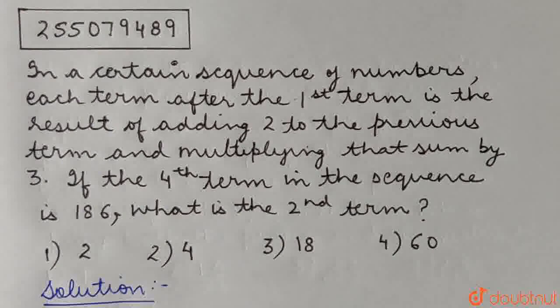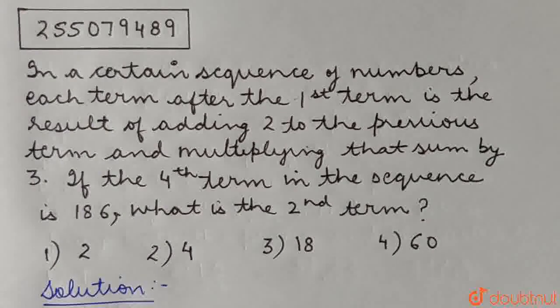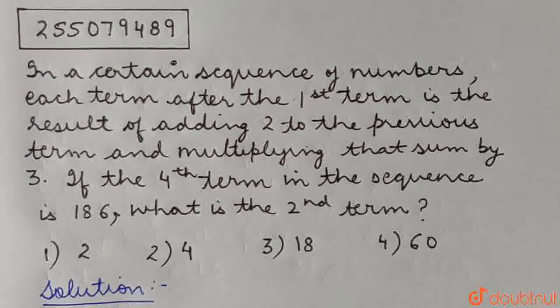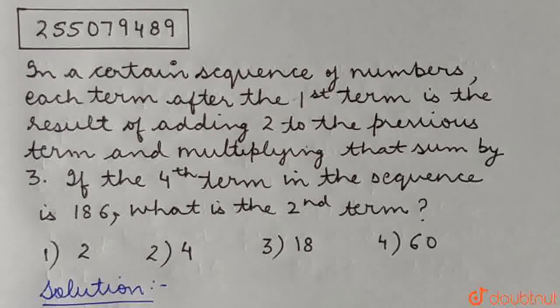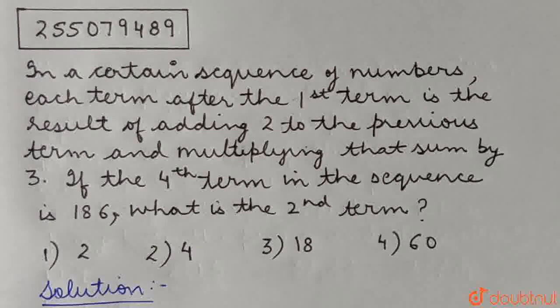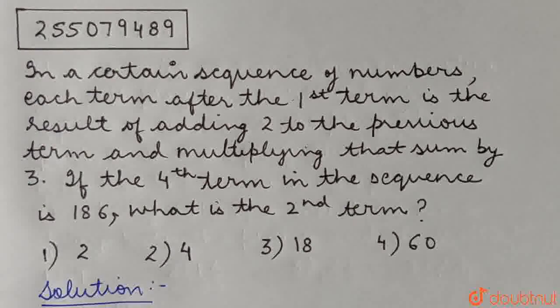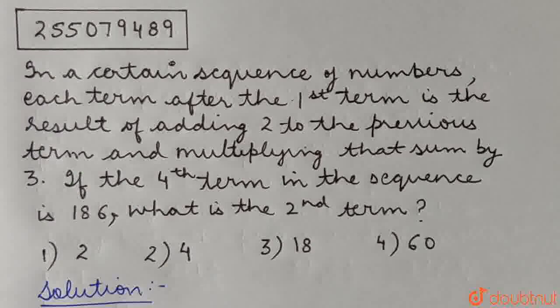In a certain sequence of numbers, each term after the first term is the result of adding 2 to the previous term and multiplying that sum by 3. If the 4th term in the sequence is 186, what is the 2nd term?